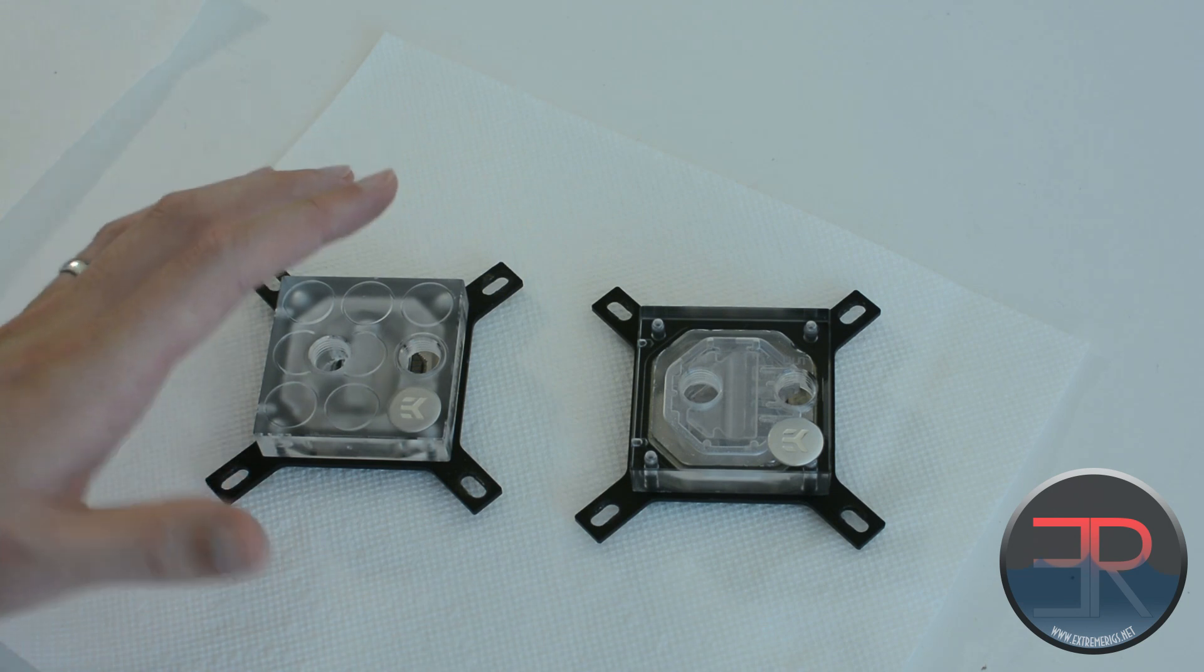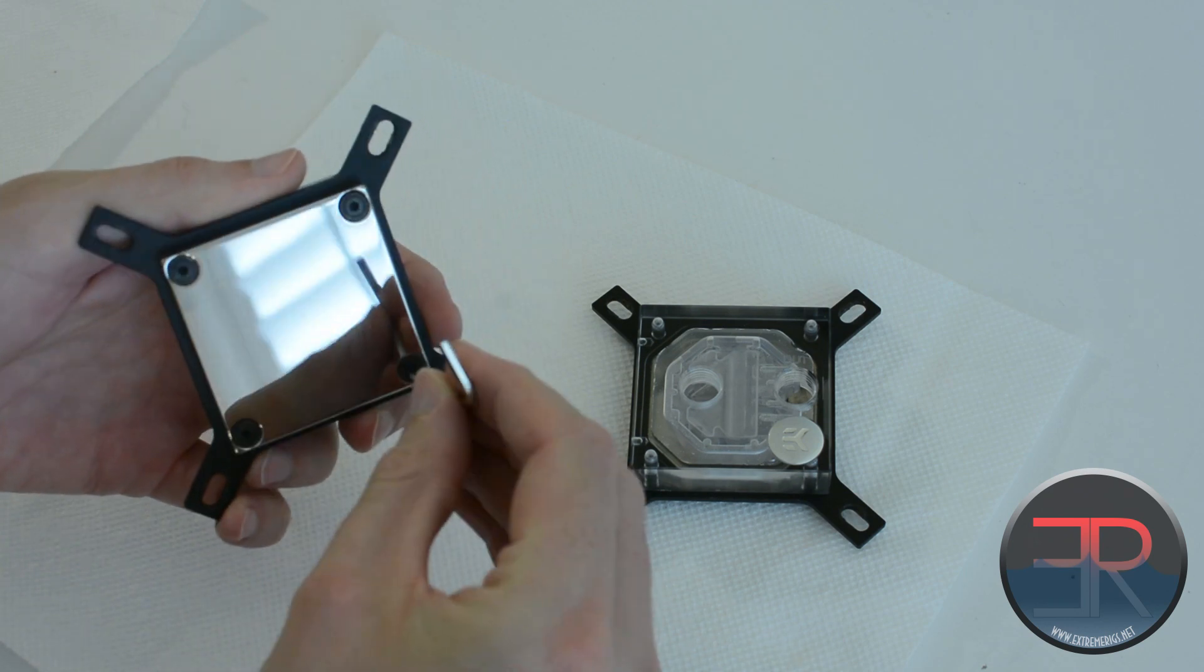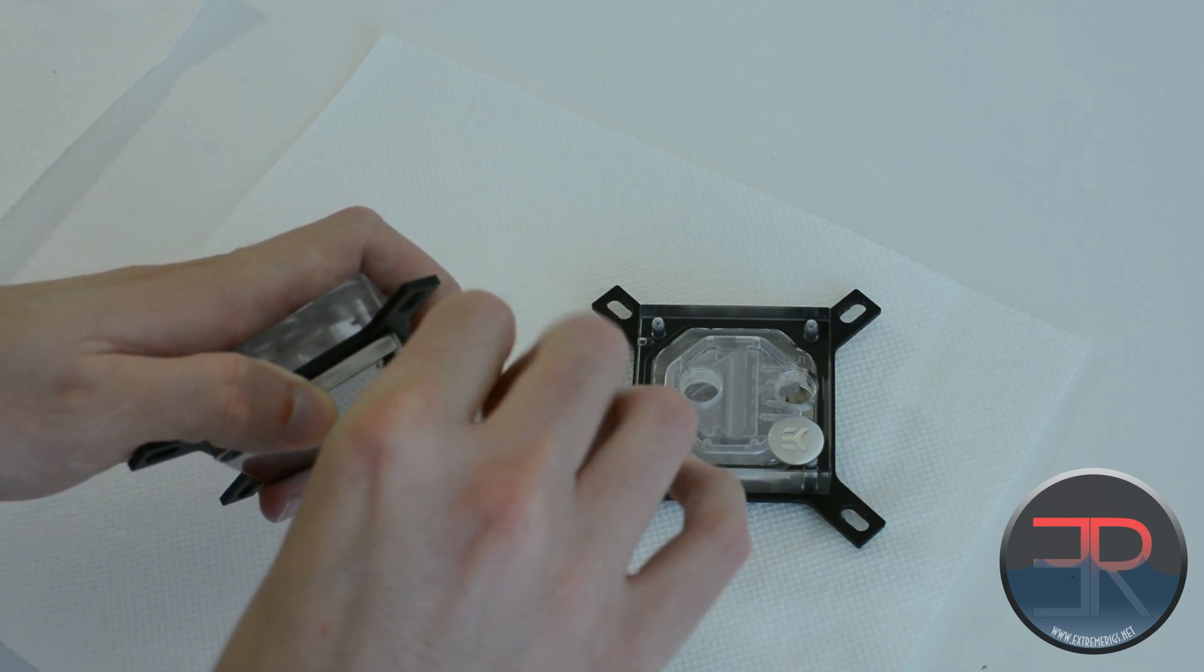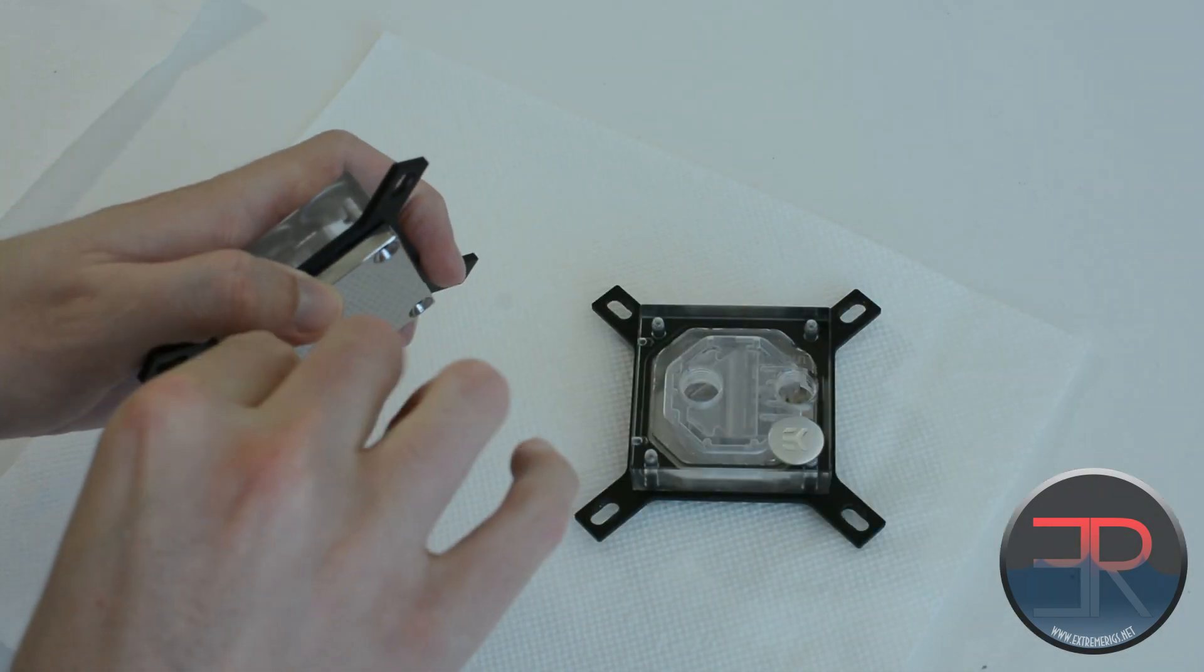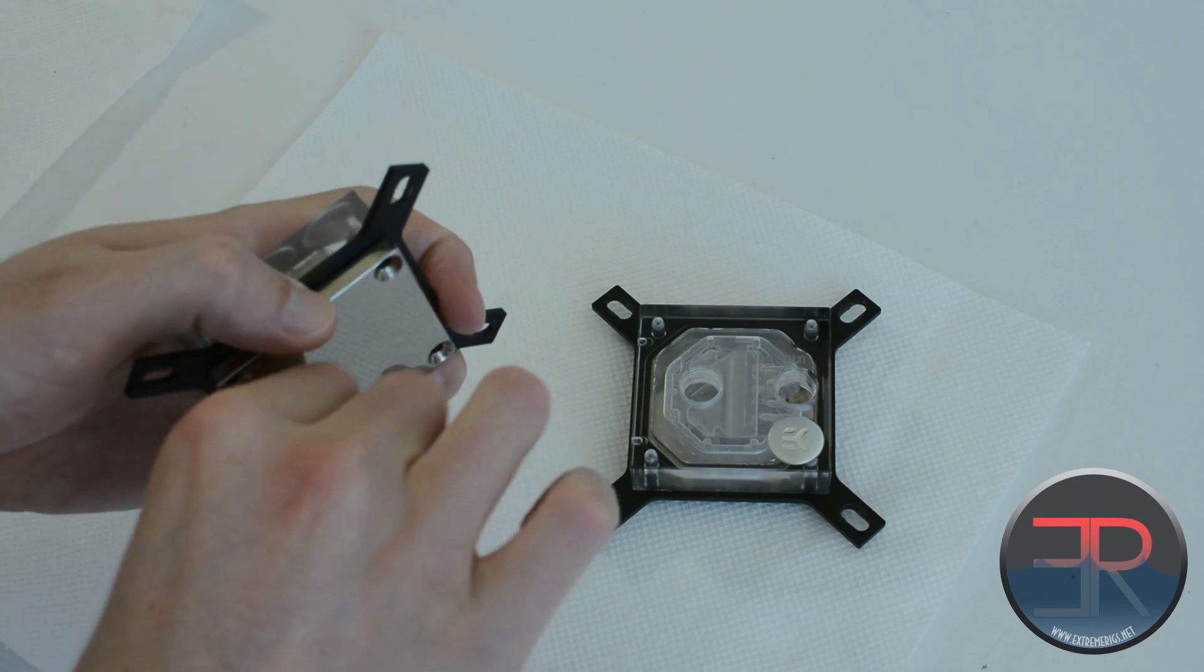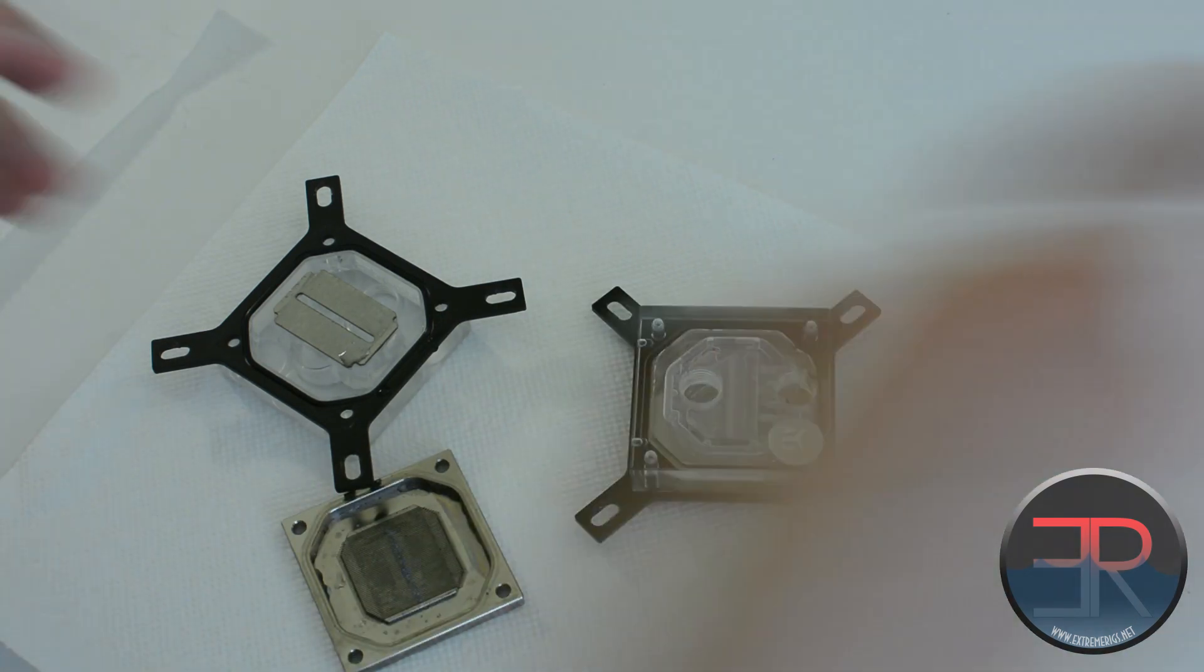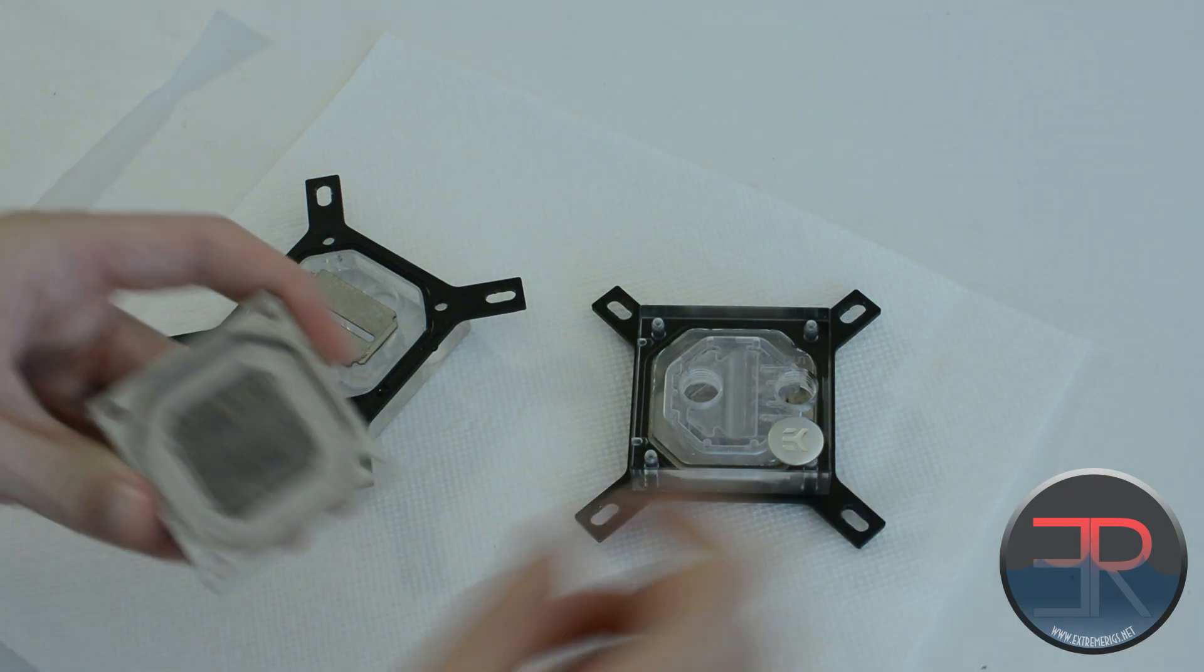So having said that, let's open it up and see what has changed. Let's start with the Supremacy. If you're not familiar with what's inside the Supremacy blocks or really any modern day CPU block, most CPU blocks these days involve a copper base that's had grooves or channels machined into it. And then a jet plate is used to force the water into the center of those channels and then out to the side. So as we open this up, you'll see a little gunk. Let's dry this off.